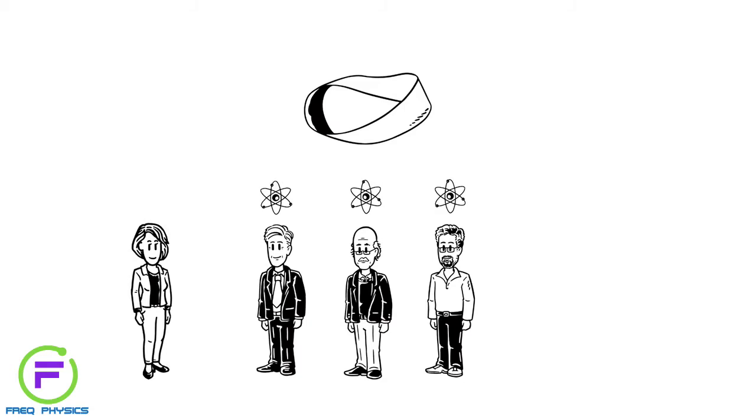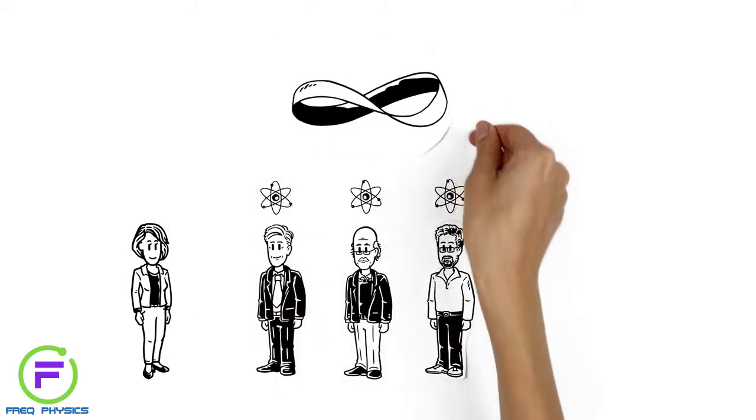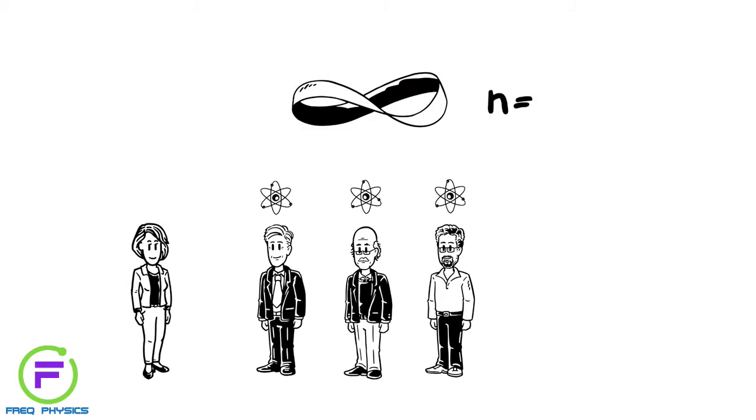Topology describes properties that are preserved under deformations and manipulations. In topology, an integer number, called a topological invariant, can be assigned to all objects that share the same properties.